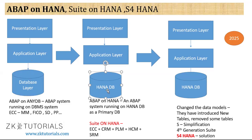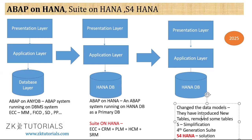After that they completely changed the database — HANA database became their primary database, and that is called Suite on HANA. But after changing the database, their performance was not increasing. So they thought of changing their data model. They simplified the database tables and data models in HANA, did a lot of research, obtained simplification of data models, and that has become S4 HANA — simplified, fourth generation.